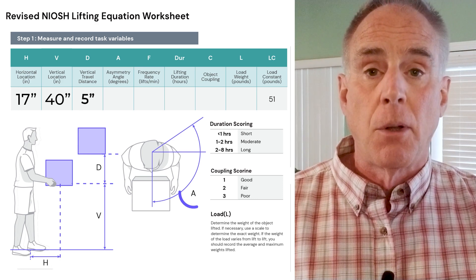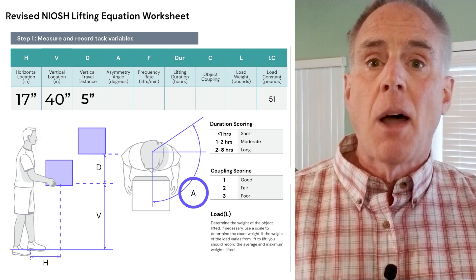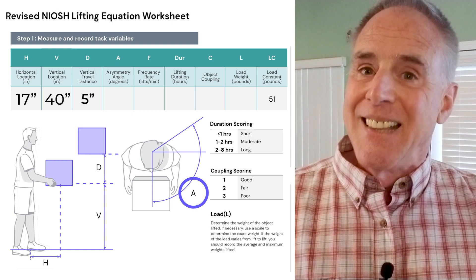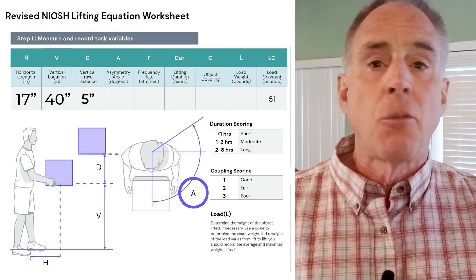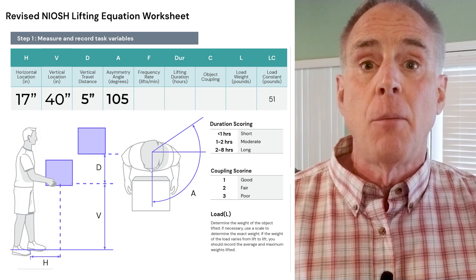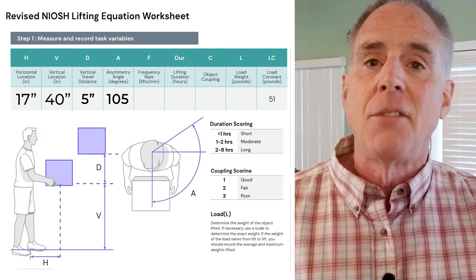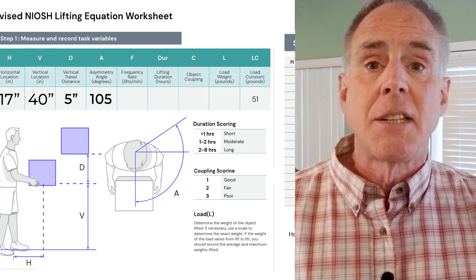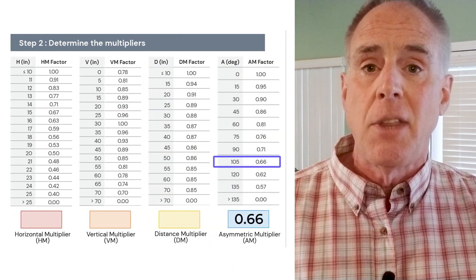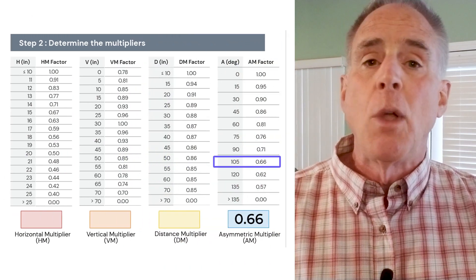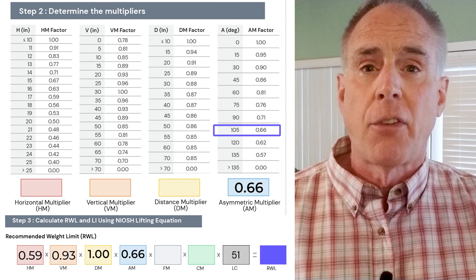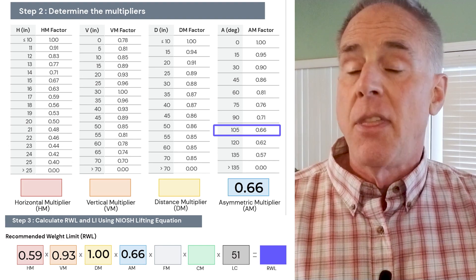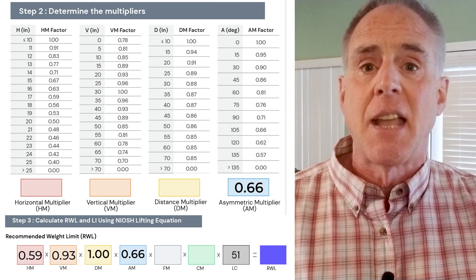Next, we include number four, the asymmetry in lifting risk variable. In our calculation, the asymmetric modifier is defined by lifts that start or end outside of our midline of our bodies. We collect a field measurement, as always, and for our asymmetry angle, in our example, it's 105 degrees. We plug the 105 degree asymmetry angle measurement into the asymmetry angle conversion table. Then, we plug the asymmetry angle multiplier from that conversion table, and we plug it into our asymmetry angle in the equation. In this case, it's 0.66.